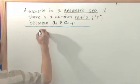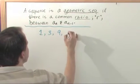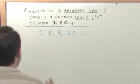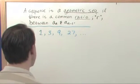If I gave you the sequence, 1, 3, 9, 27, it goes on and on. Then I asked you, okay, obviously these do not differ by a constant number, just like the arithmetic guys.